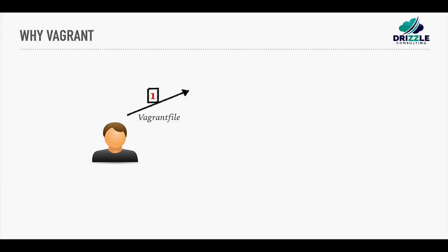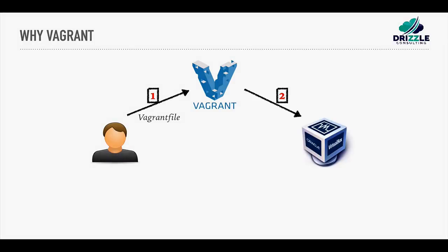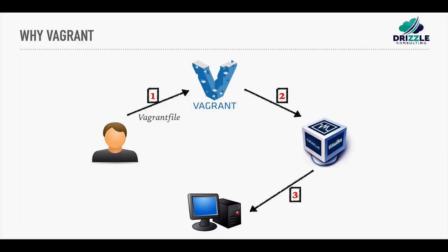So let's see how the flow goes. It all starts with you as a developer — you create a Vagrantfile, or you obtain it, maybe from source control or from a fellow developer. Then Vagrant will take the Vagrantfile and run it on top of VirtualBox. So Vagrant needs VirtualBox, and it will create a new image for you. Once the image is created, it's available for Vagrant.